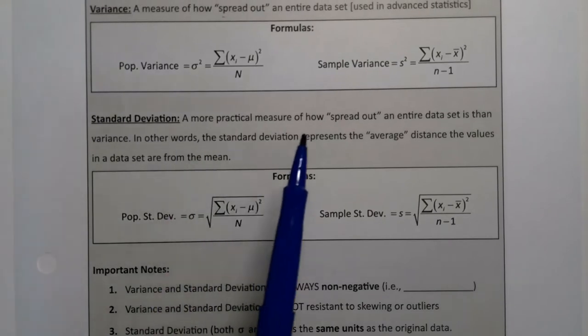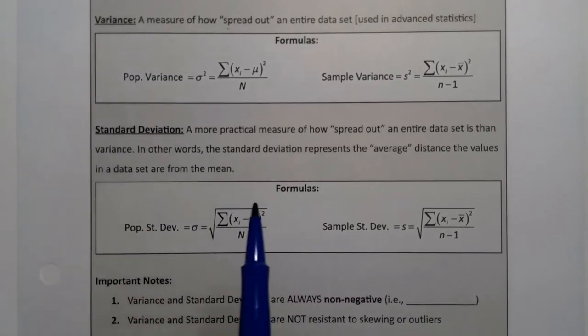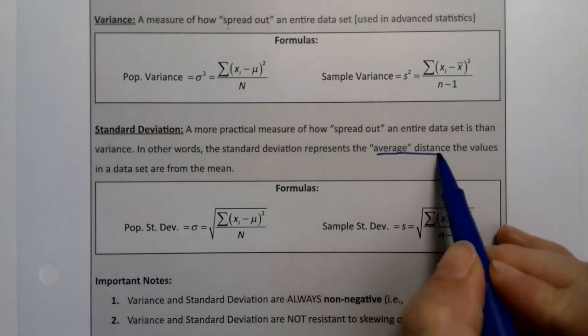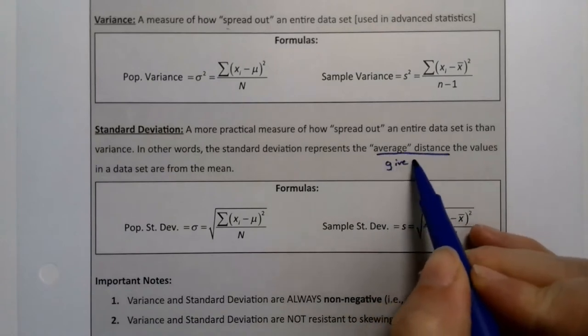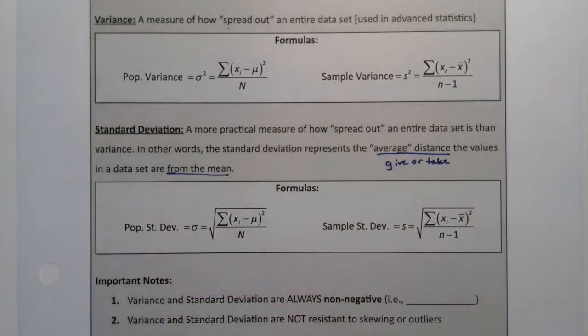So standard deviation is a measure of how spread out the data set is, as is the variance, right? But it measures the average distance from the mean. That's why we kept saying give or take, right? Give or take from that mean. That's the interpretation piece.